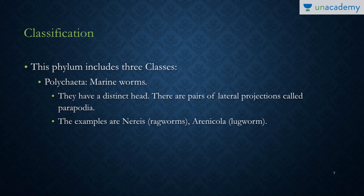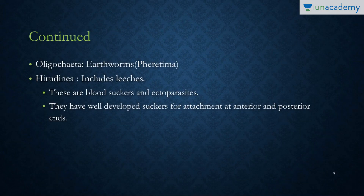The phylum consists of more than three classes, but the three important ones are as follows. First, the Polychaetes — these are exclusively marine worms with a distinct head, and their characteristic feature is the parapodia. Examples are Nereis, also called the ragworm, and Arenicola, called the lugworm.